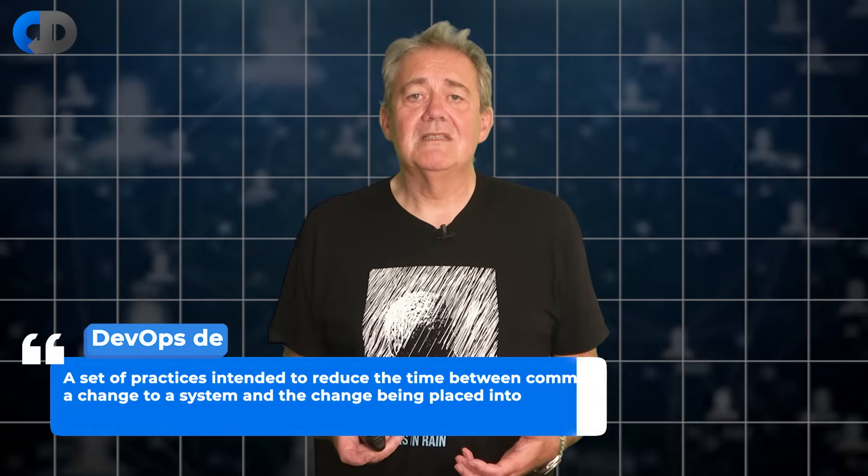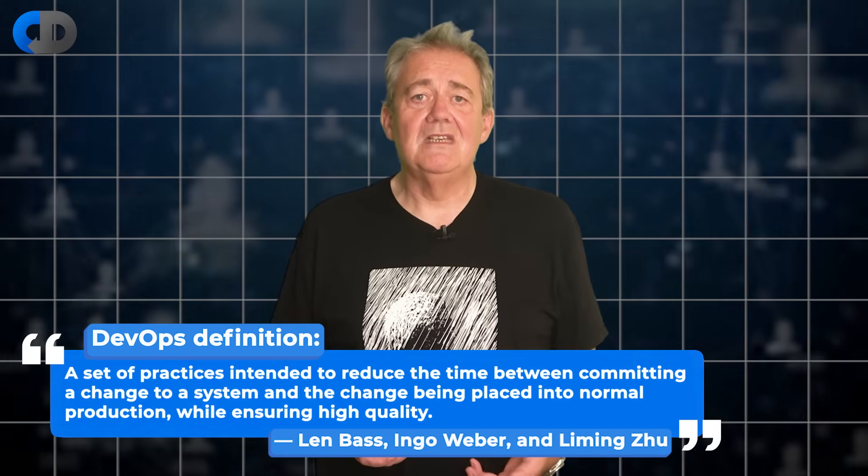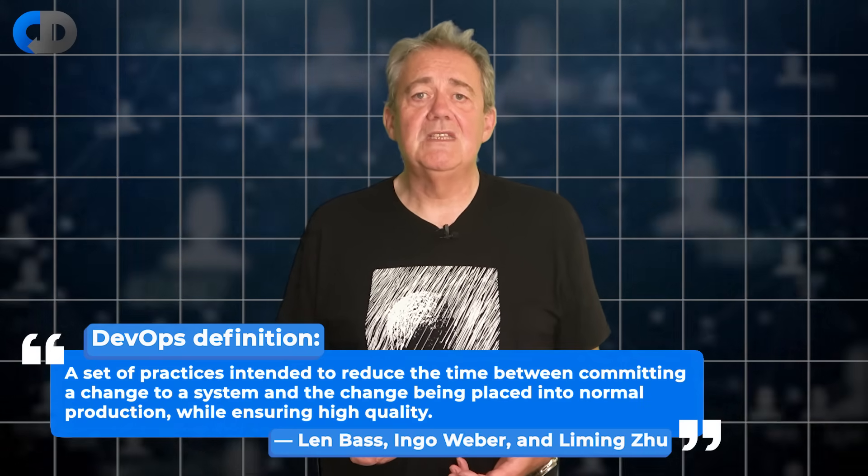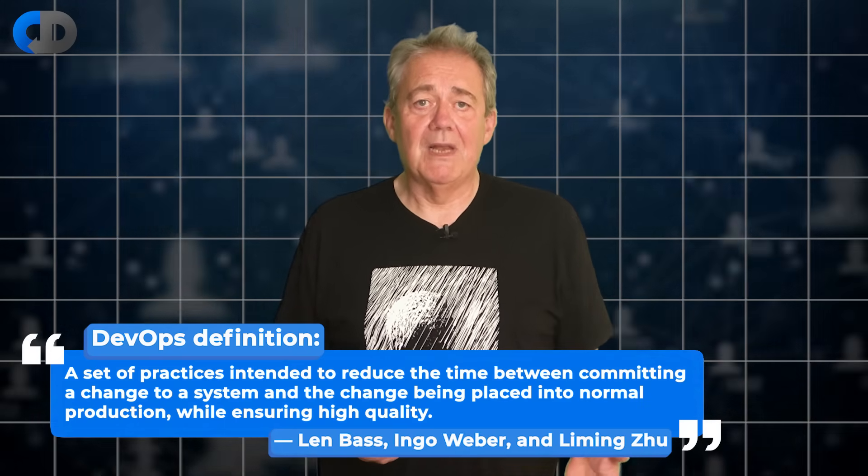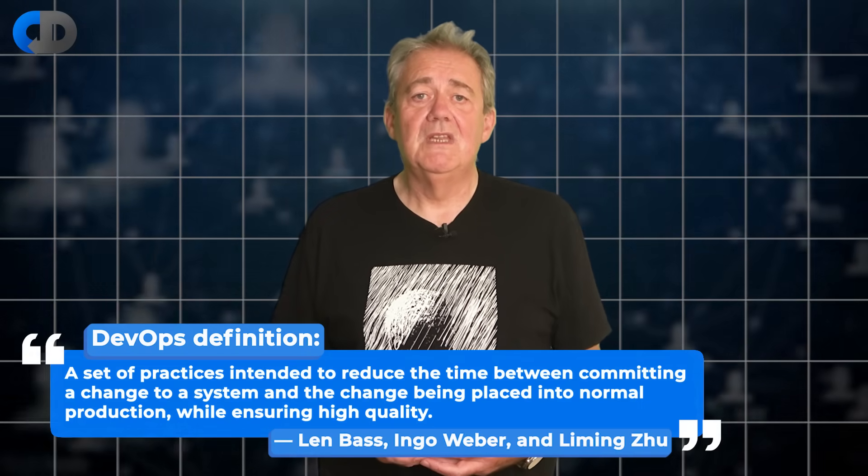DevOps is an important idea and it's much bigger than only about the collaboration between development and operations. So what does DevOps really mean and why is it important? Len Bass, Ingo Weber and Liming Zhu define it as a set of practices intended to reduce the time between committing change to a system and that change being placed into normal production while ensuring high quality. I think that's an excellent description. My only reservation with it is that it sounds quite a lot like a definition of continuous delivery too.